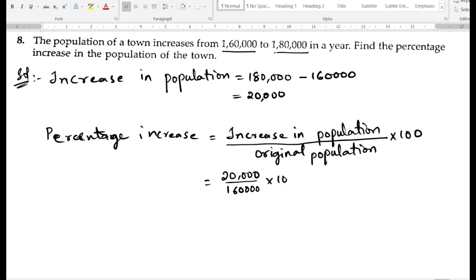We can directly cancel these four zeros, and from the numerator two zeros. So next we can cancel, so we get 25 by 2.